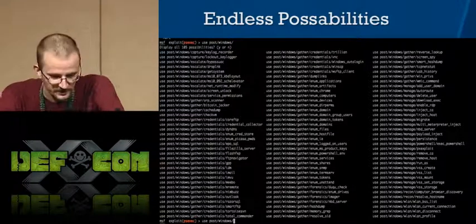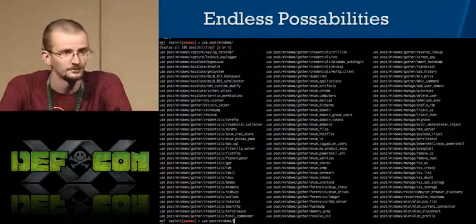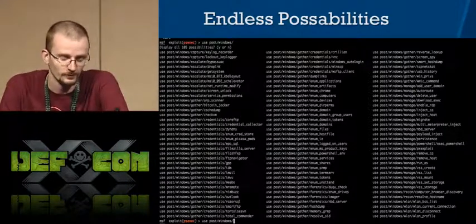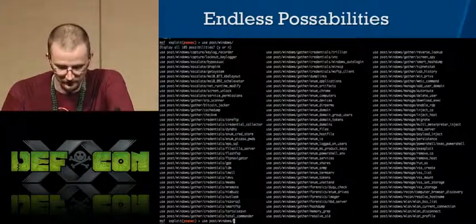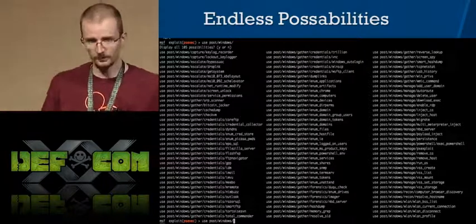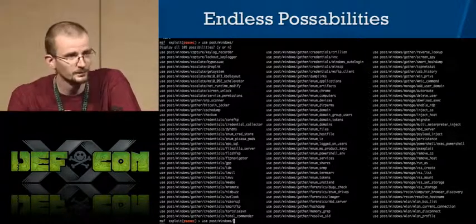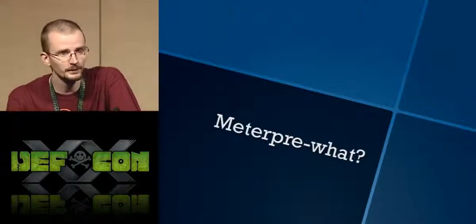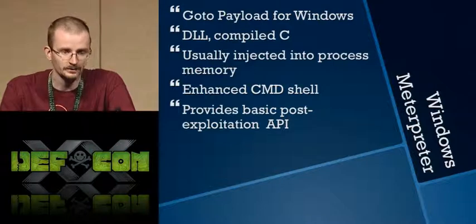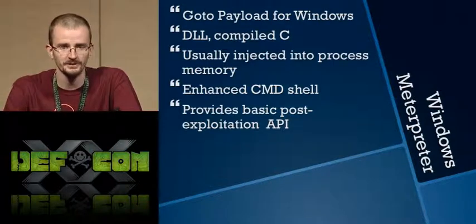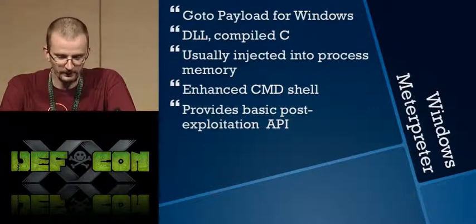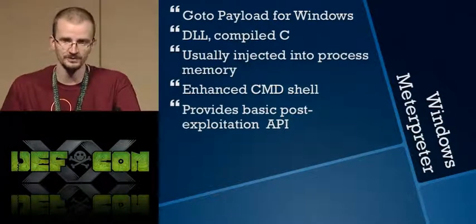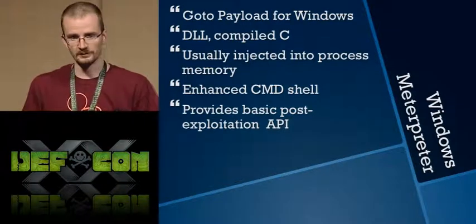In a very short period of time we've come up with a lot of new possibilities through the advent of the post module. Just in Windows post modules alone there are 105 modules currently in the Metasploit framework. These do everything from screwing with the wireless card to decrypting stored passwords — just about anything you can possibly imagine. This is all made possible on the Windows environment from our Meterpreter payload.